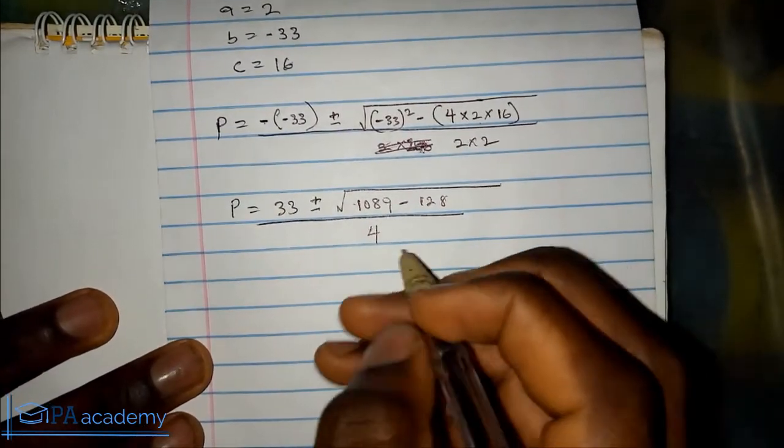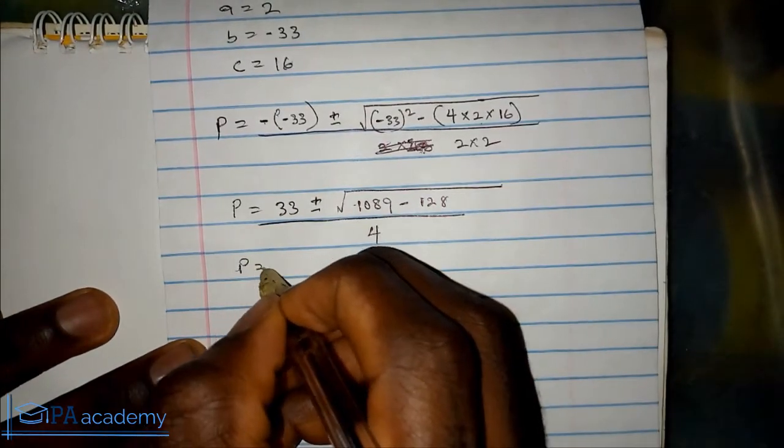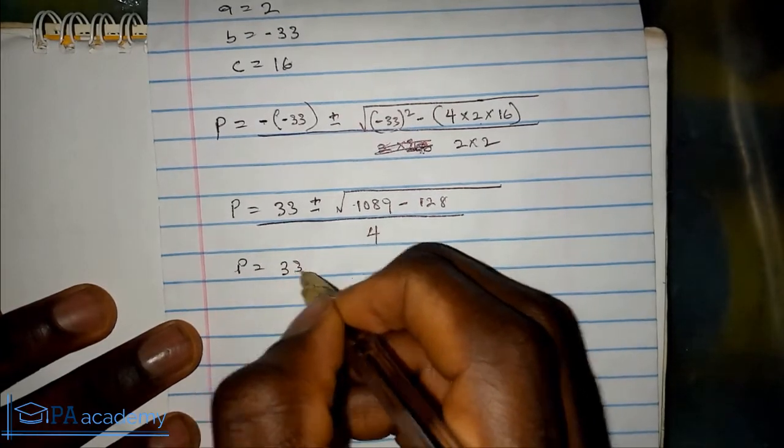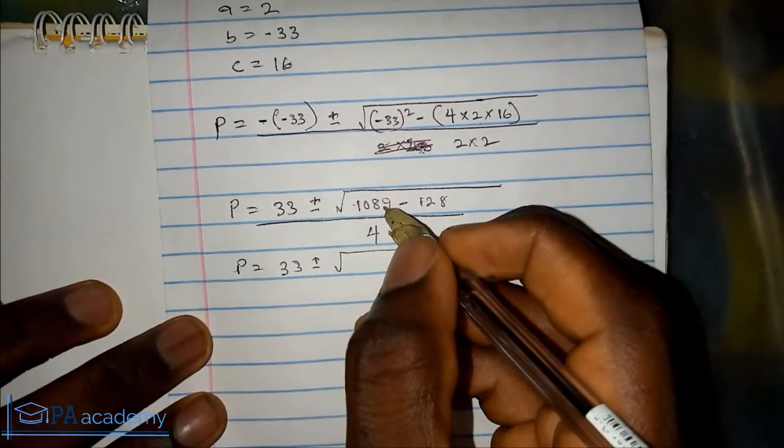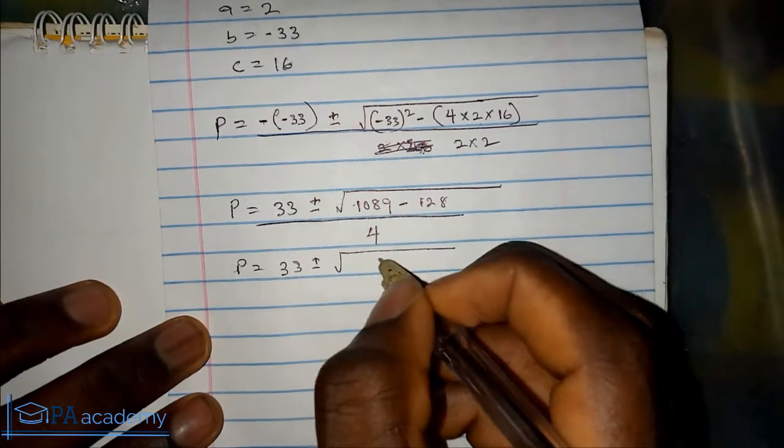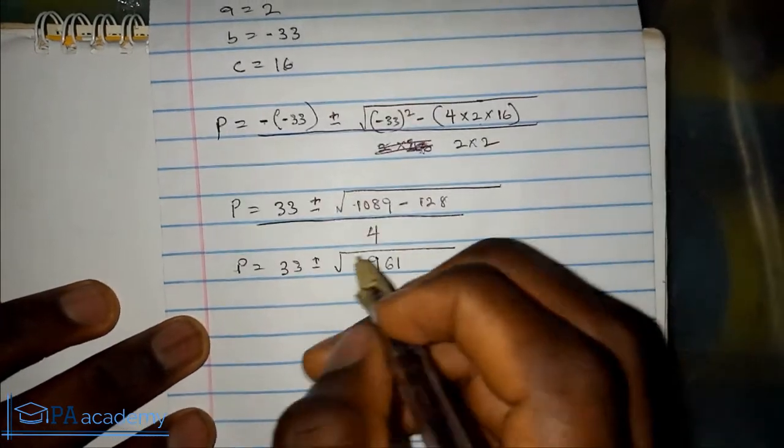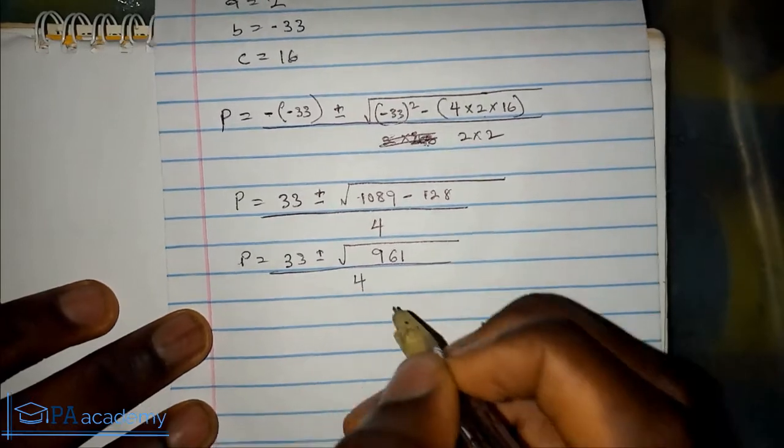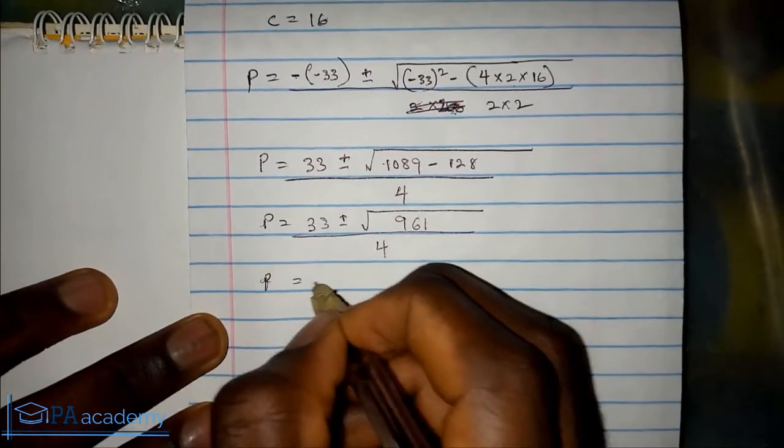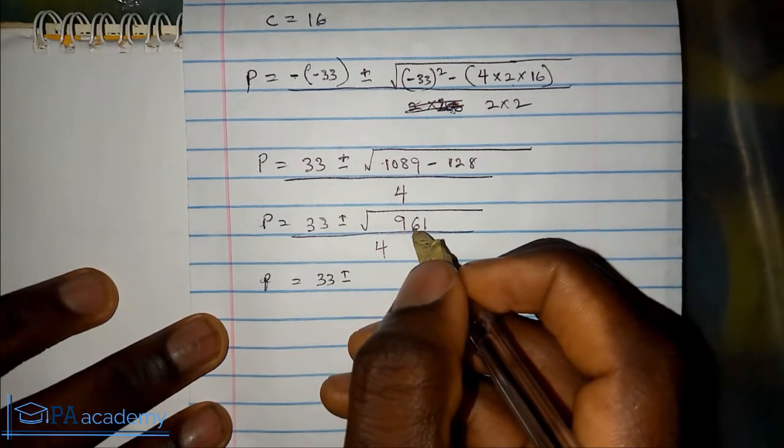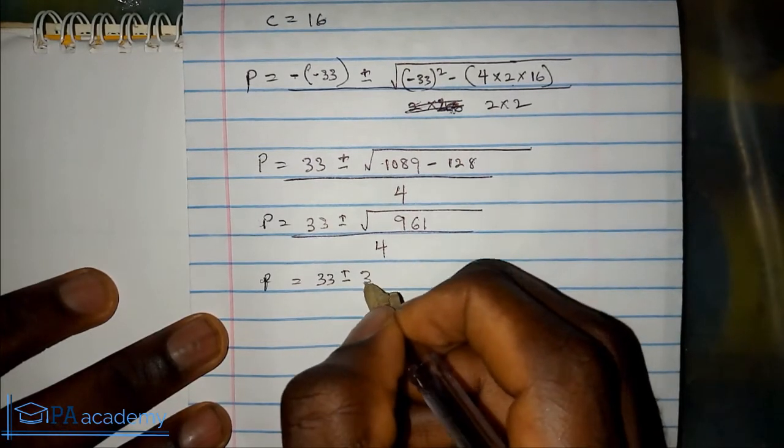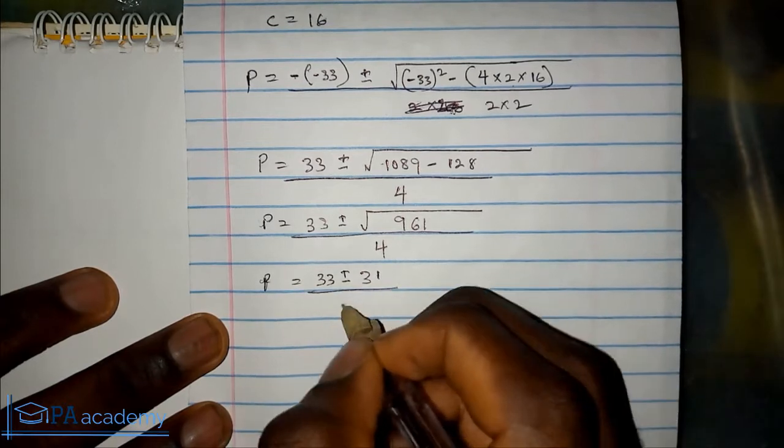Let's continue. p equals 33 plus or minus square root of, 1089 minus 128 is 961, all over 4. p equals 33 plus or minus, square root of 961 is 31, over 4.